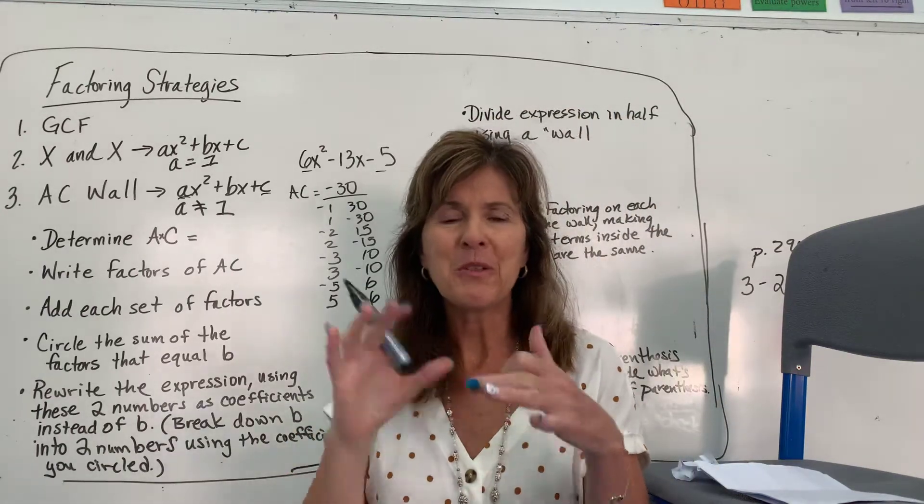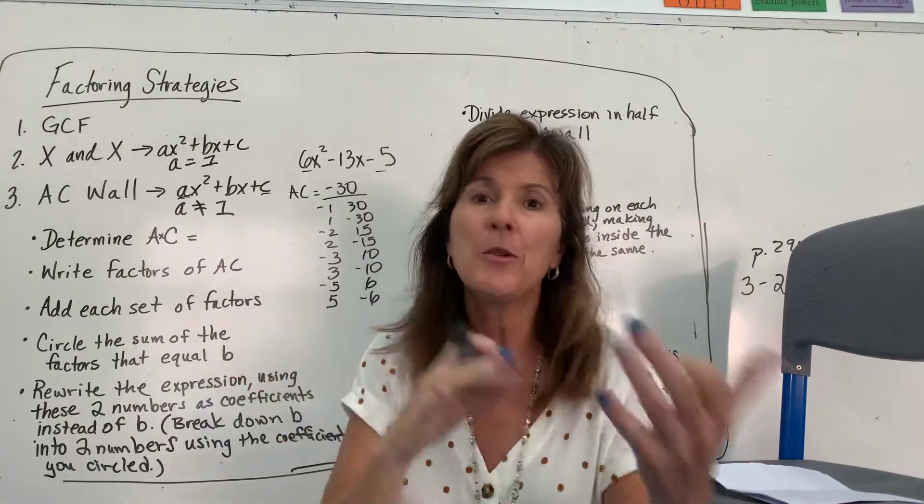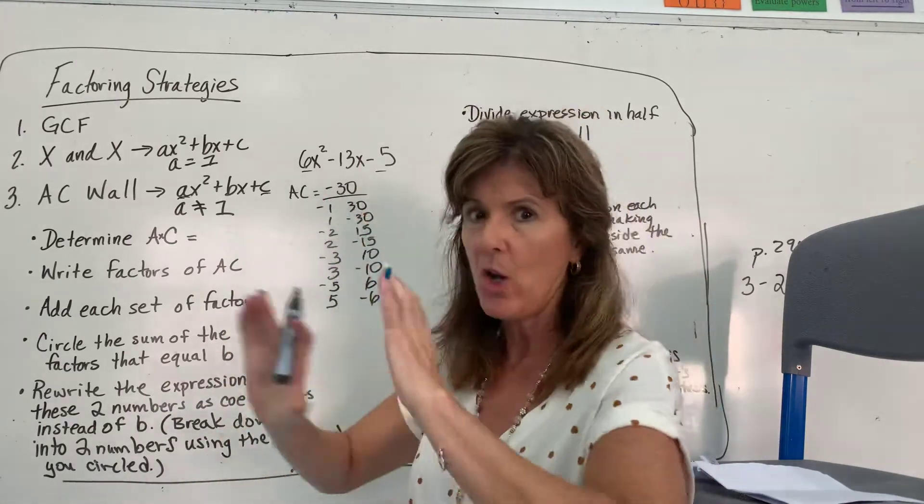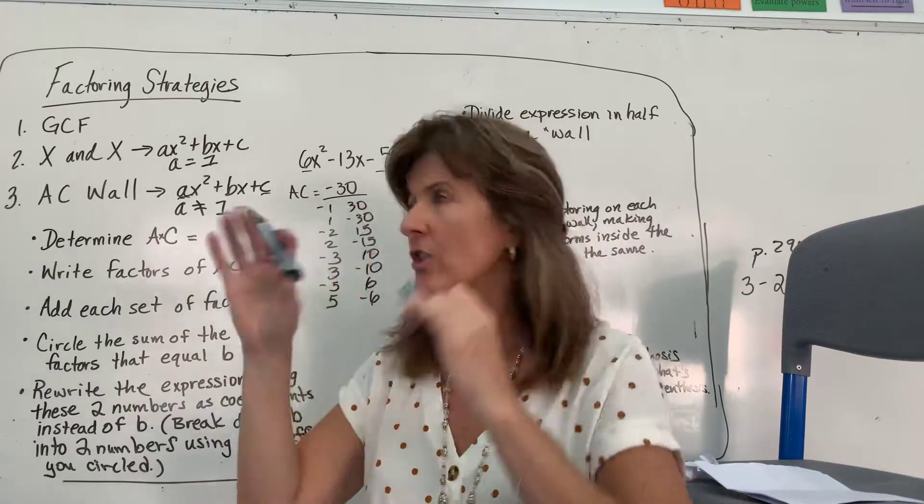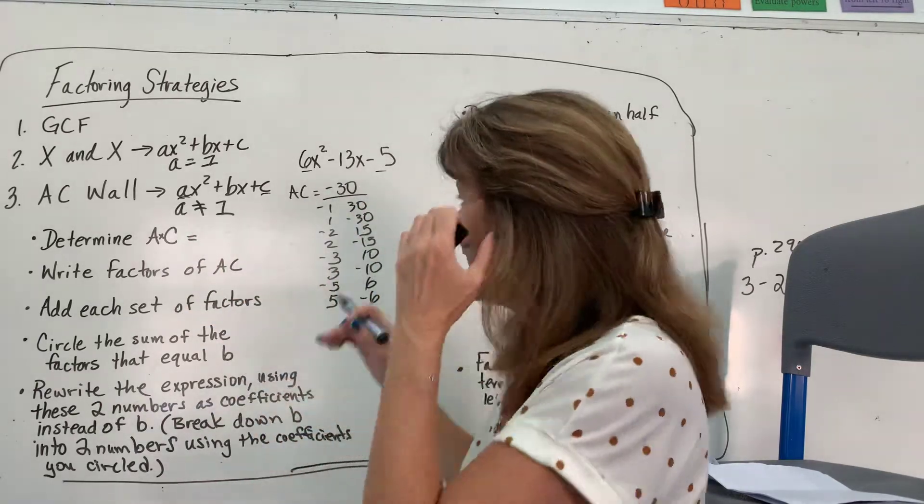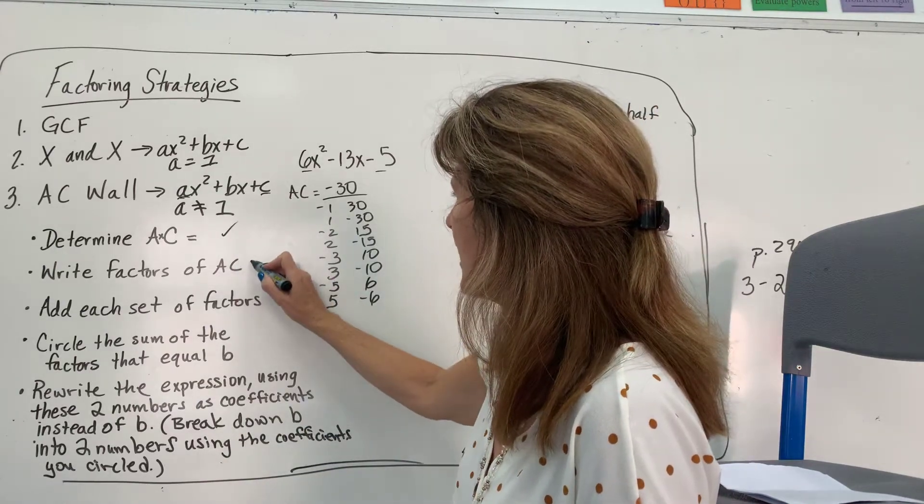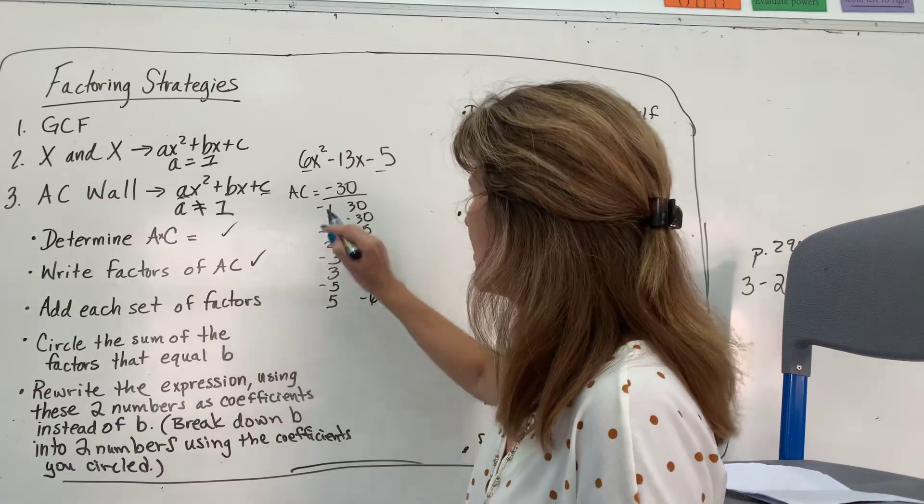That's a lot. And I promise you, the more you do this, the fewer steps you're going to have to do. I'm just showing you all the steps. And then, eventually, you'll be able to think in your mind which are the factors I need to use. But, this is the way to do it for now. Determine AC. I wrote the factors of AC. Add each set of factors.